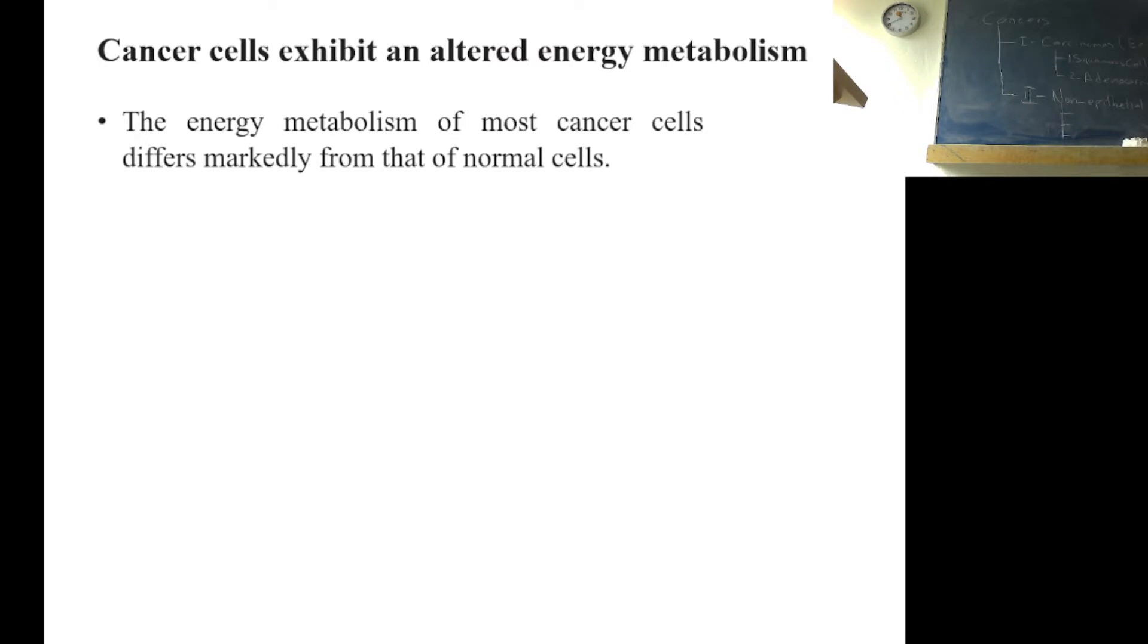The energy metabolism of most cancer cells differs markedly from that of normal cells. Energy metabolism is the one at ATP production. Cancer cells do not use the generalized ATP production. They don't convert oxygen to ATP. They use glycolysis. So this energy metabolism is different in cancer cells. How different?